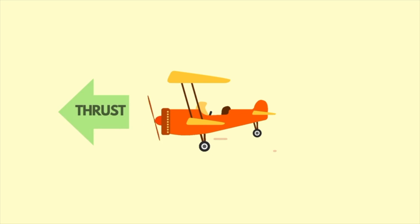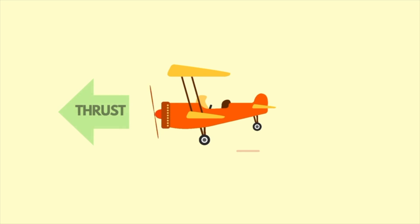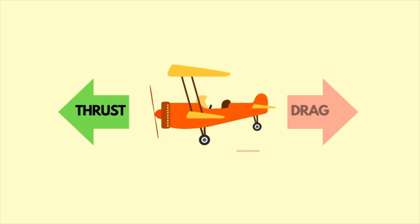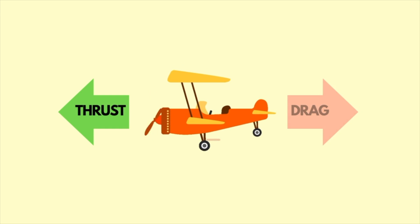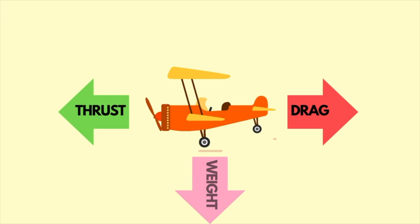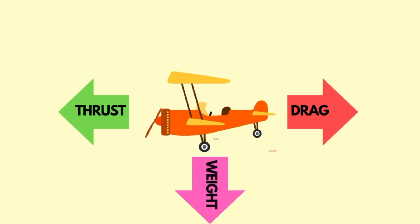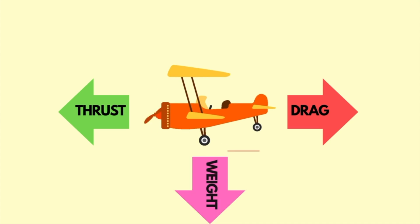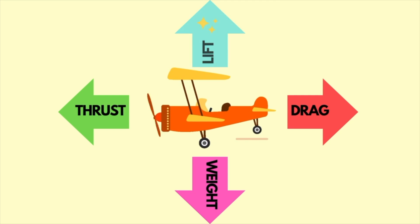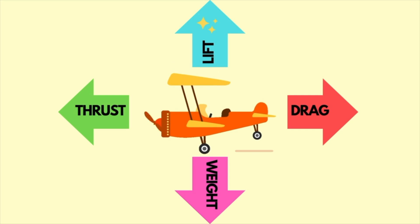So let's start with the basics — the four forces of flight. When the aircraft moves forward, that's by the use of thrust. And the resistance for this forward motion is given by drag. This heavy metal weighs a lot, which acts downwards — that is the weight. And the star of the show, which actually makes flying possible, is the lift.